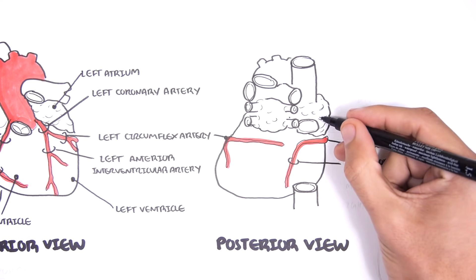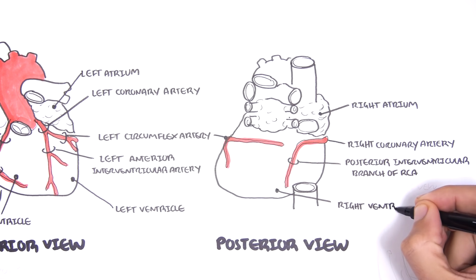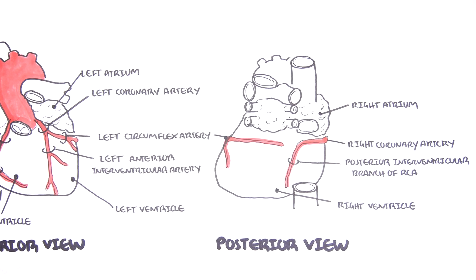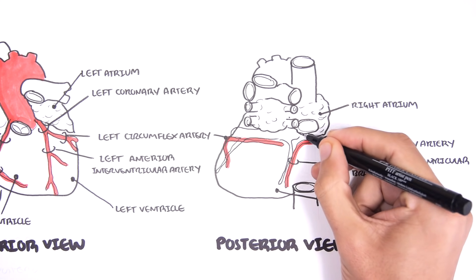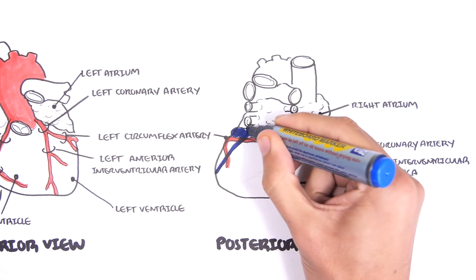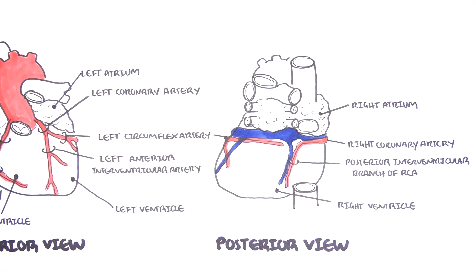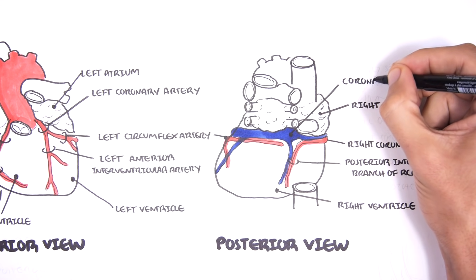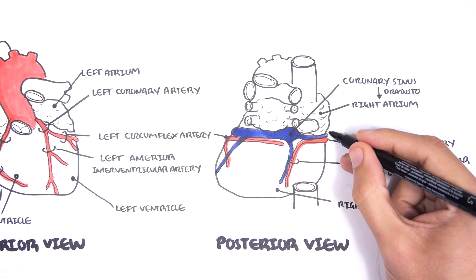Just to complete this diagram — here you have your right atrium and your right ventricle. Now because the heart has its own blood supply, it obviously has to have its own venous drainage. These are the coronary veins which actually drain into the right atrium through what's called the coronary sinus. The coronary sinus drains into the right atrium.